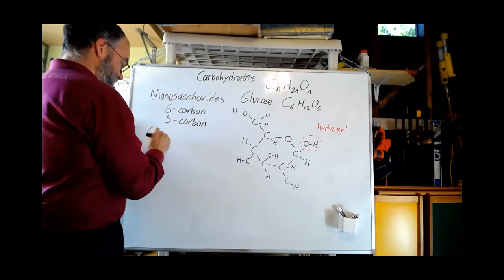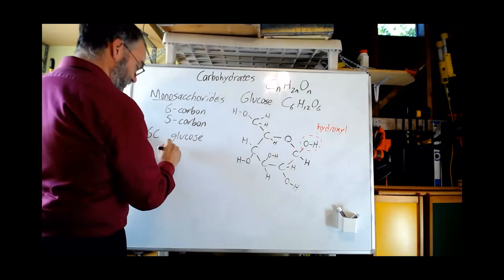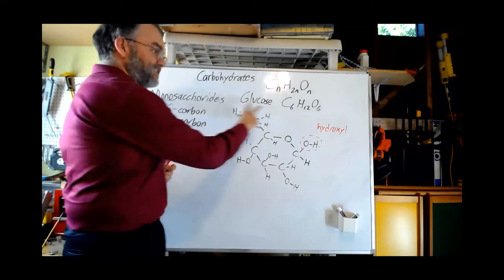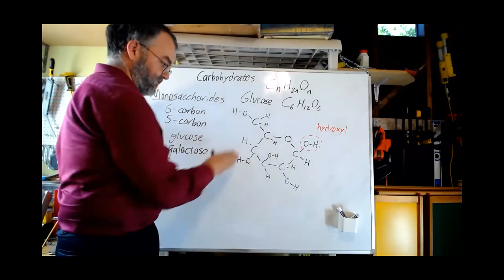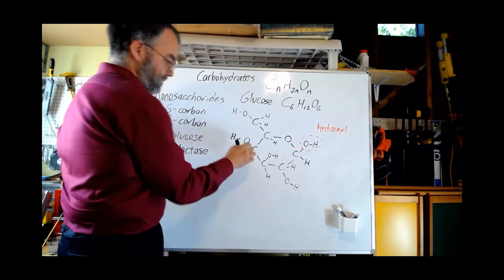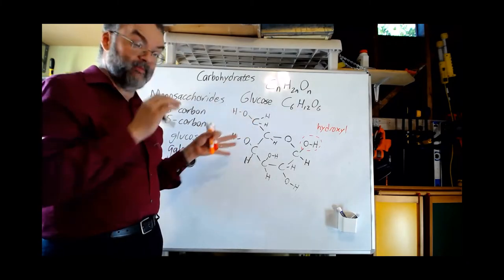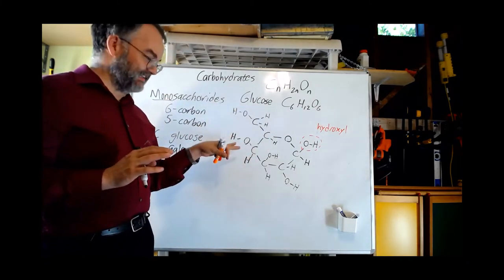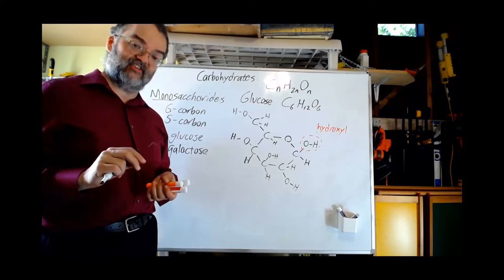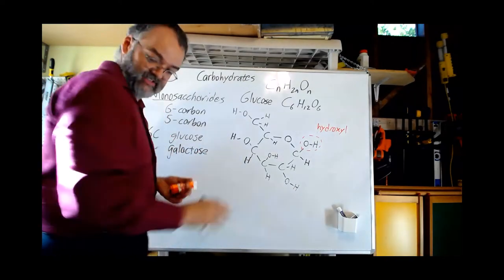Glucose is the simple six-carbon sugar, and pretty much the basic fuel for both aerobic and anaerobic metabolism. Of the six-carbon monosaccharides, there are two others most important in human biochemistry: galactose and fructose. The only difference between glucose and galactose is that in galactose, one of the OH groups is reversed — the OH is up and the H is down. The chemical formula is identical, but the slightly different structure causes galactose to behave a little differently.